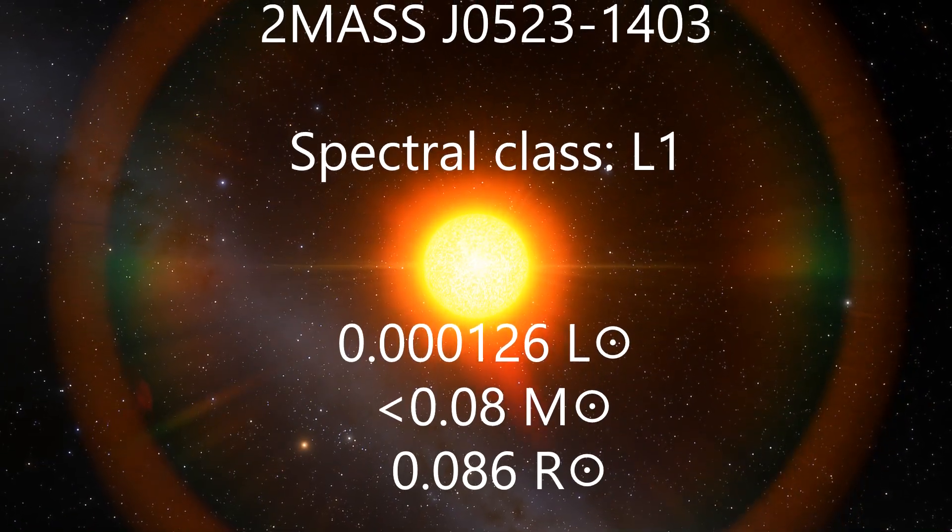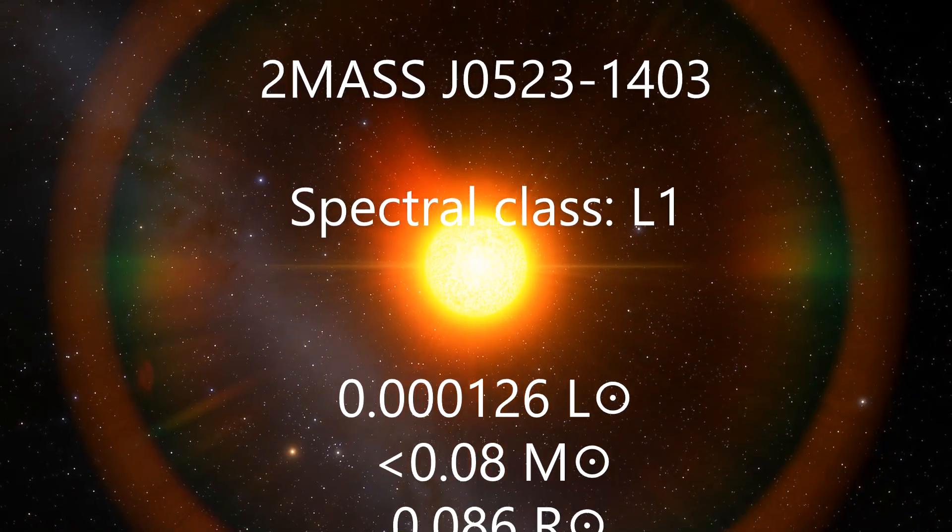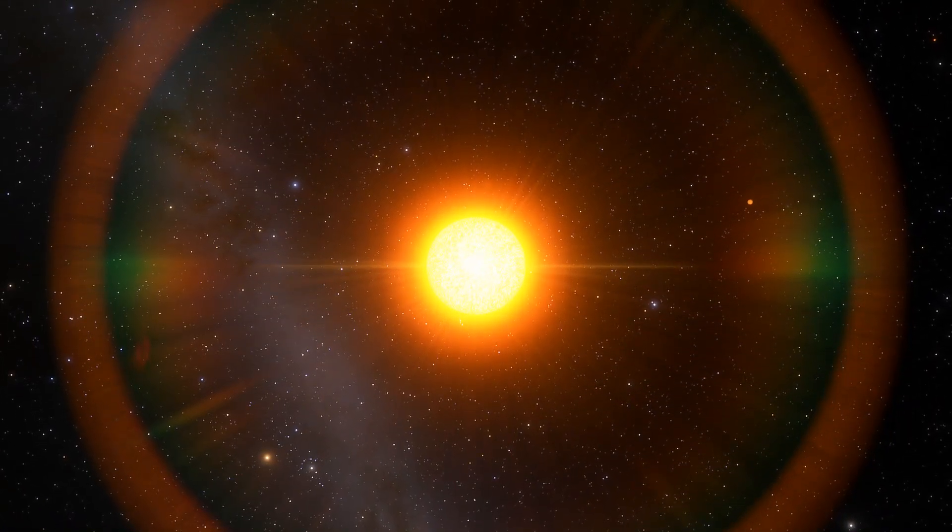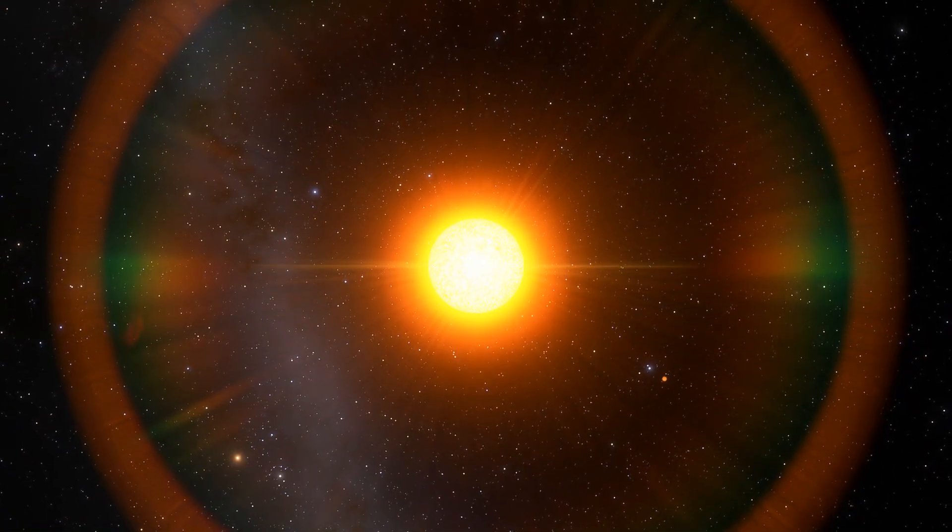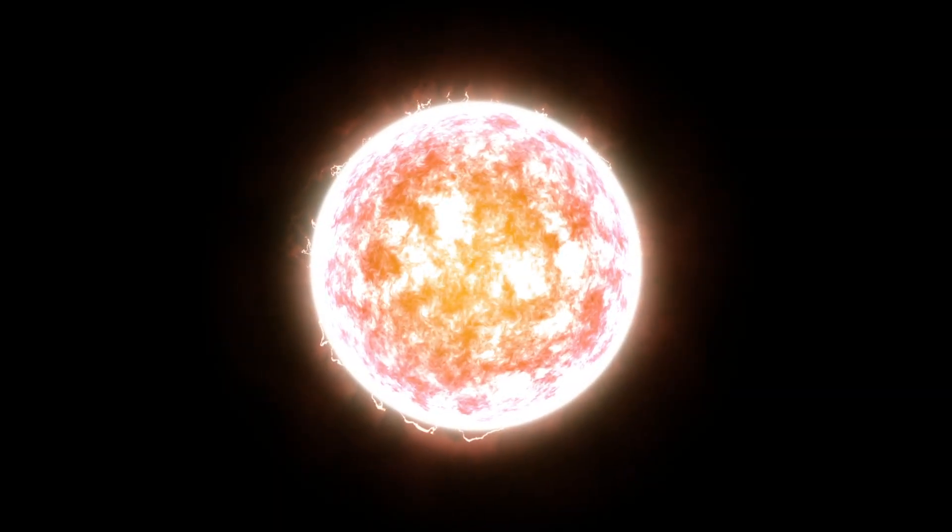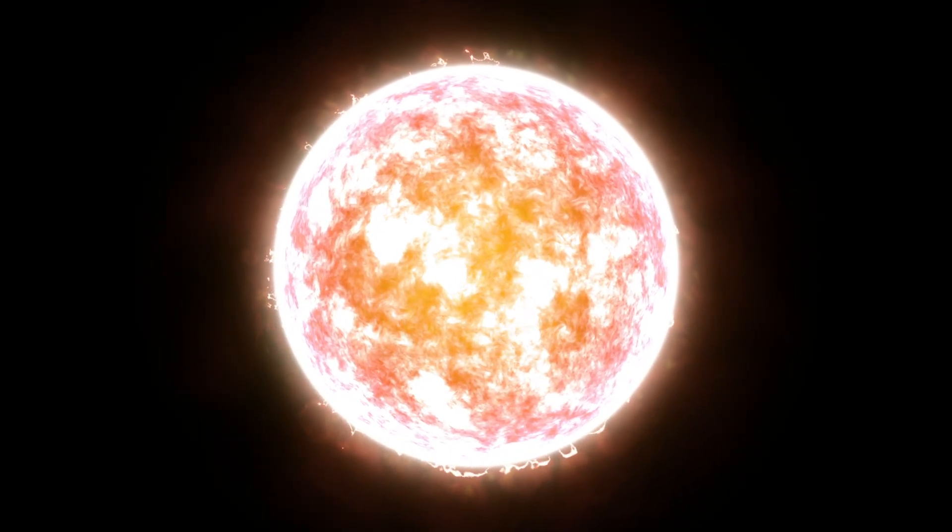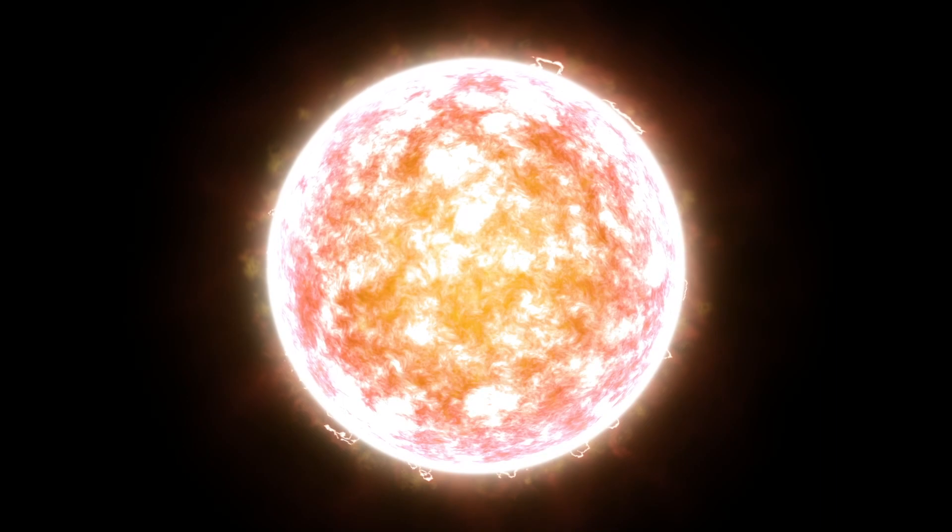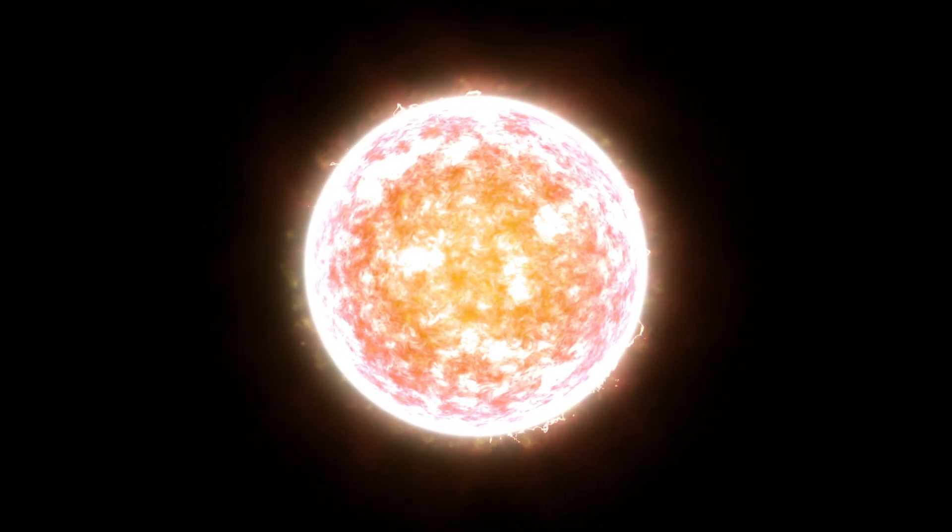For example, one of the smallest known stars that can be attributed to the main sequence is the red dwarf 2MASS J0523-1403 of spectral class L1 in the constellation Lepus at a distance of 40 light years from the Sun. This star is so dim that it has a luminosity of only 0.000126 solar luminosities, a mass of about 68 Jupiter masses, a radius of 0.086 solar radii and an effective temperature of 2074 Kelvin. These values are some of the lowest known for a main-sequence star.